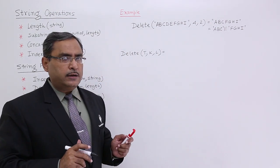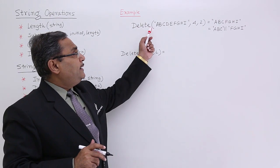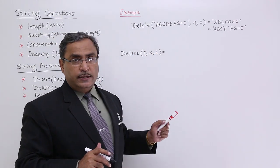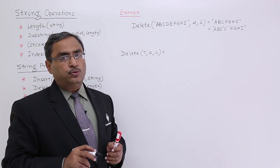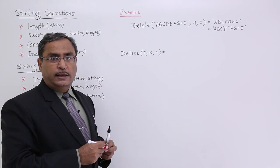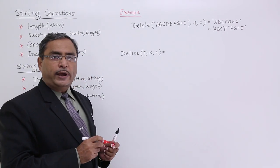Let us go for one example for better understanding. Delete(ABCDEFGHI, 4, 2). That means from the fourth place, it is supposed to delete two characters.